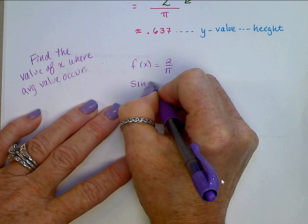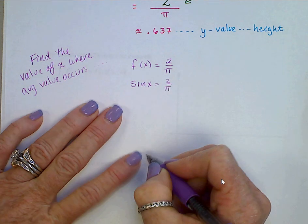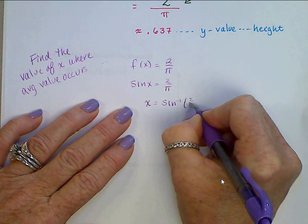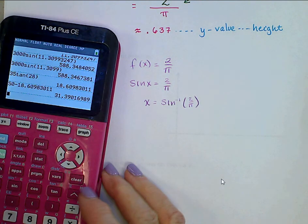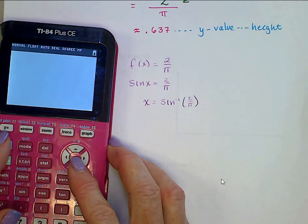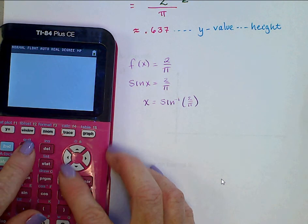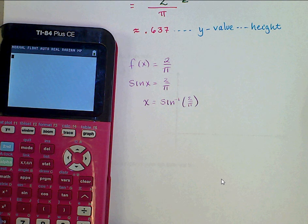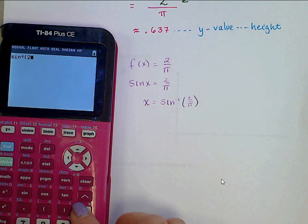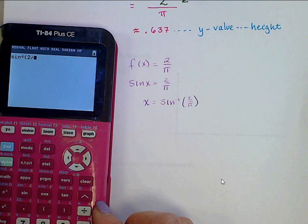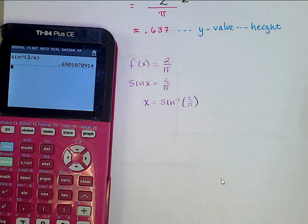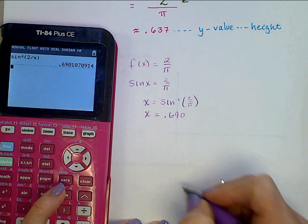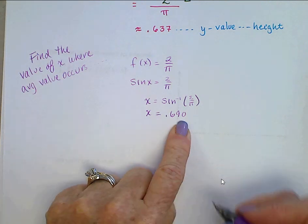Well, that's where is sine x equal to 2 over pi. Using your pre-calculus, then, you're going to have to do an inverse. Inverse sine of 2 over pi. Make sure your calculator is set in radians. And then let's do inverse sine of 2 divided by pi. And then we get 0.690. That's it. That's the x value where this average value occurs.